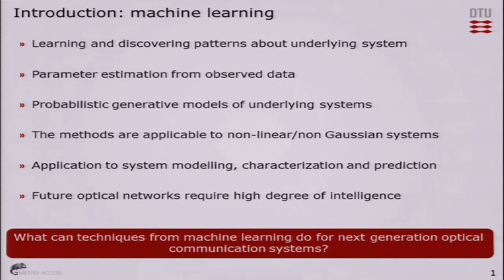The field of machine learning is about learning from observed data. The best example is the Google search engine, where algorithms learn about the user. The same thing can be done at the physical layer level — we use machine learning methods to build probabilistic models. We have observed data, extract parameters, and use this for model generation. This is very applicable for systems which exhibit non-linearities and also non-Gaussian additive noise.